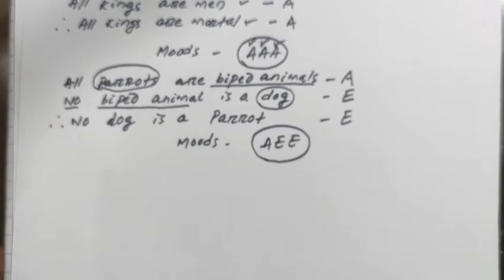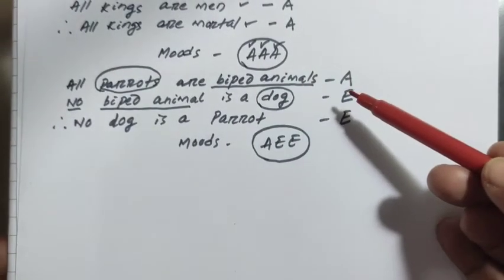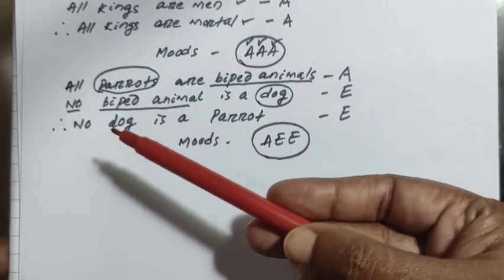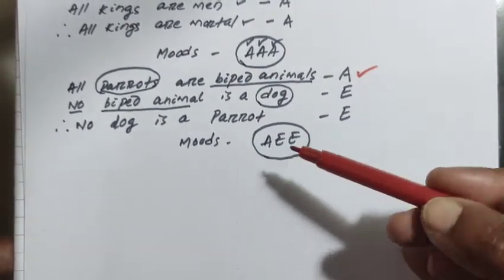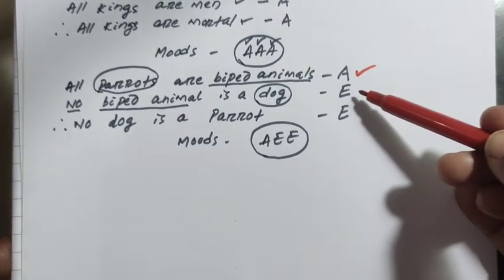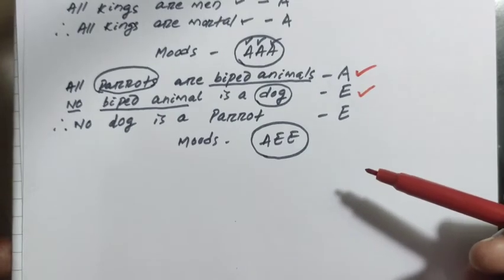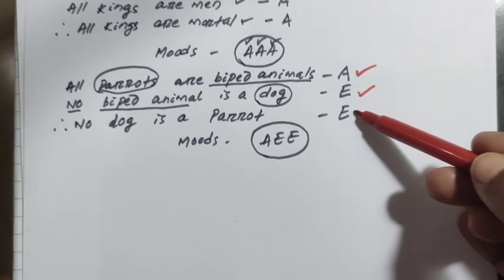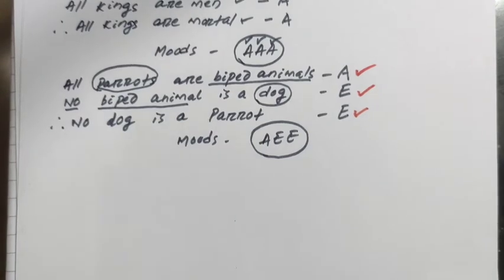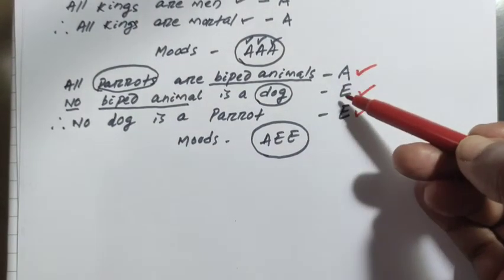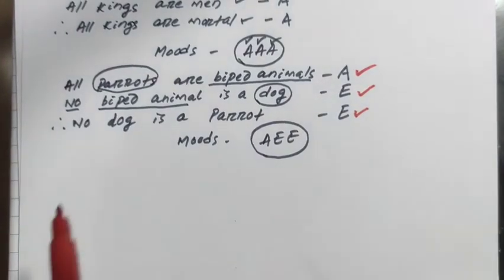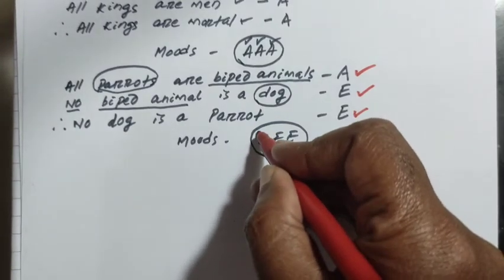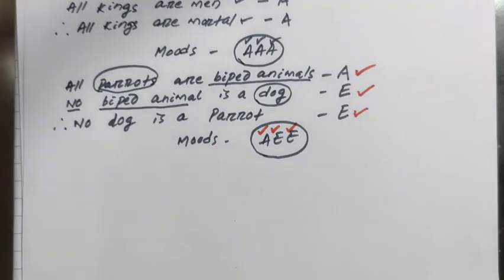Here is another concrete example: 'All parrots are biped animals' — this is a universal affirmative proposition, an A proposition. 'No biped animal is a dog' — this is a universal negative proposition, an E proposition. Therefore, 'No dog is a parrot' — this is also an E proposition, a universal negative proposition. So the mode of this syllogism is A, E, E — A for major premise, E for minor premise, and E for conclusion.